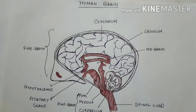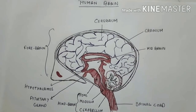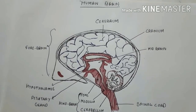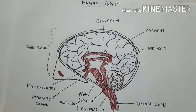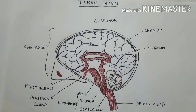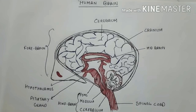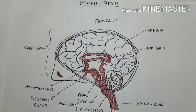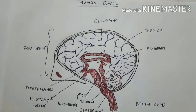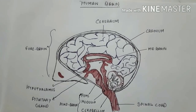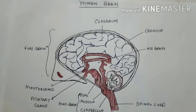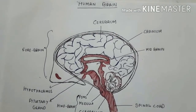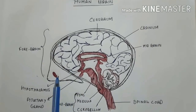The brain is the first part of the central nervous system. It is the widest and uppermost part of the central nervous system and is the highest coordinating center of the body. The weight of the brain in normal human beings is about 1.2 to 1.4 kg, and it has about 100 billion neurons. The brain is divided into three parts.